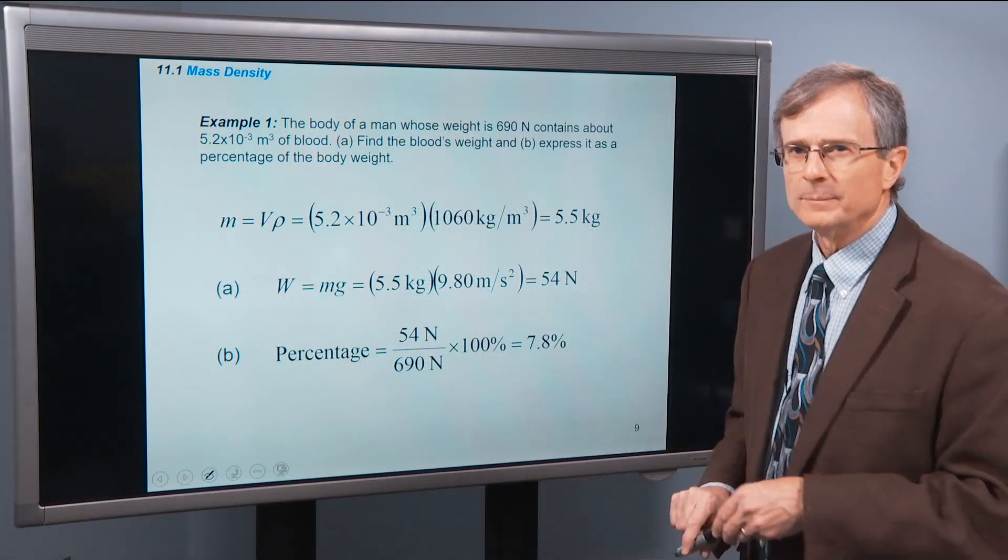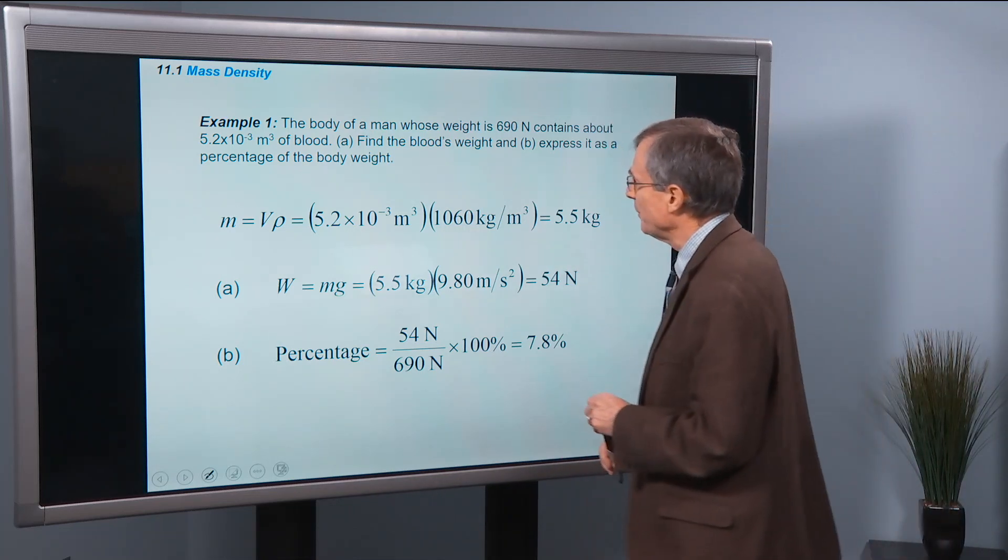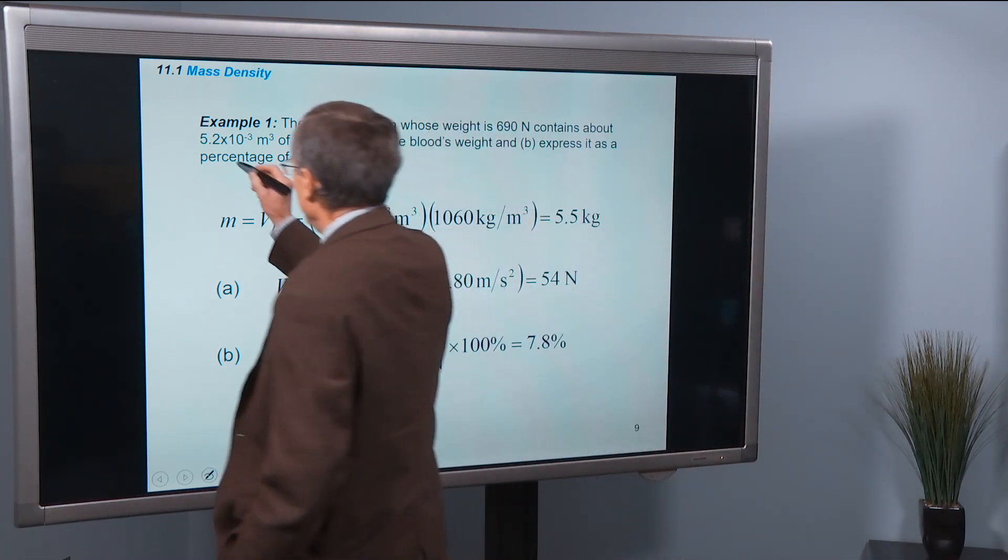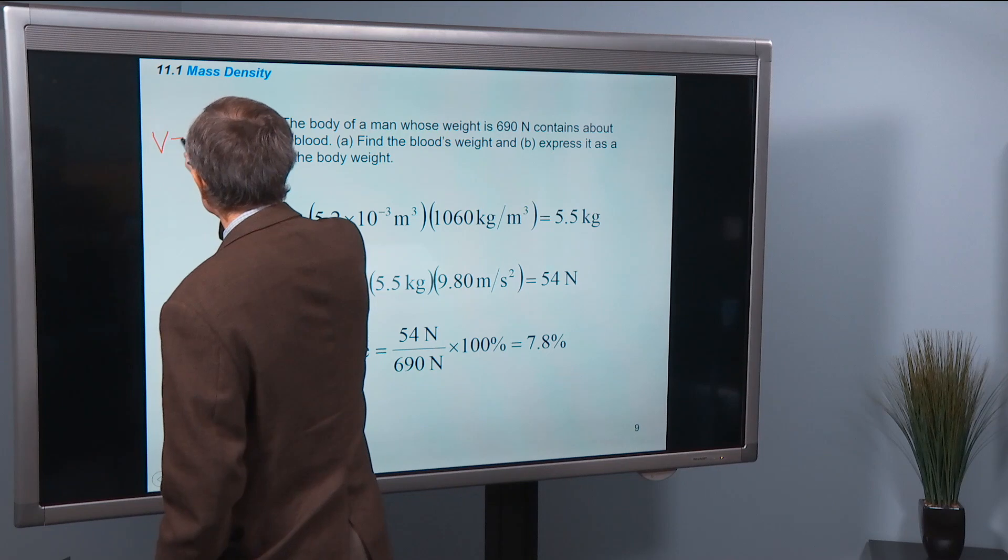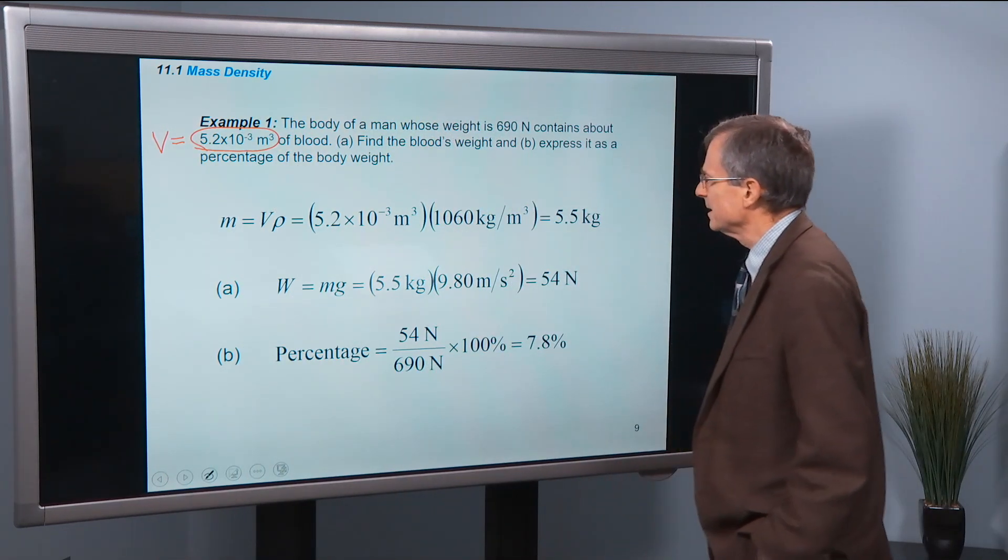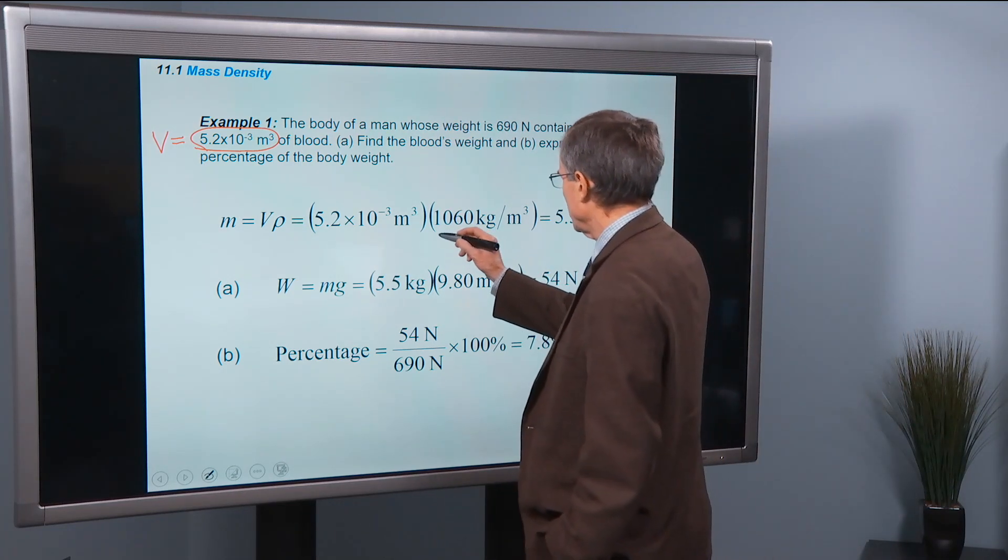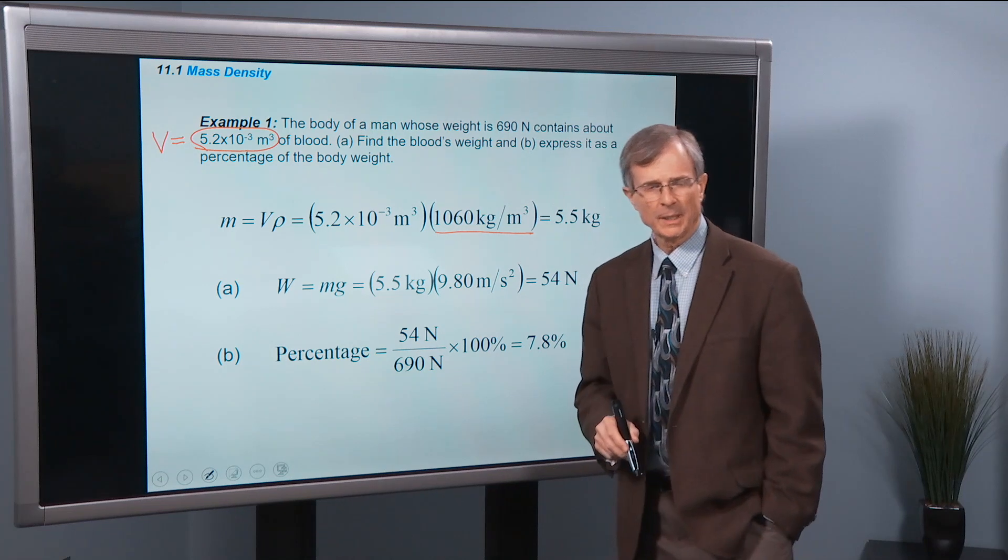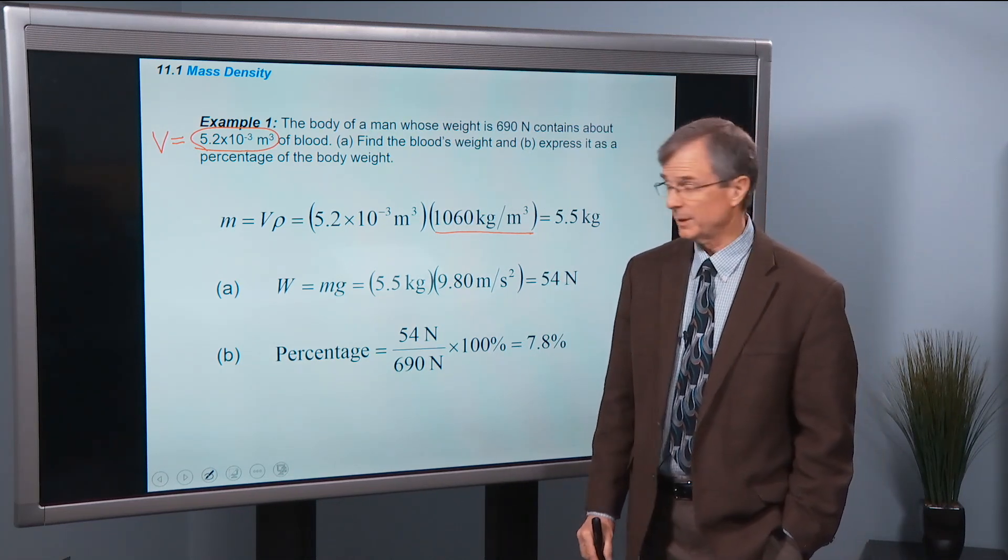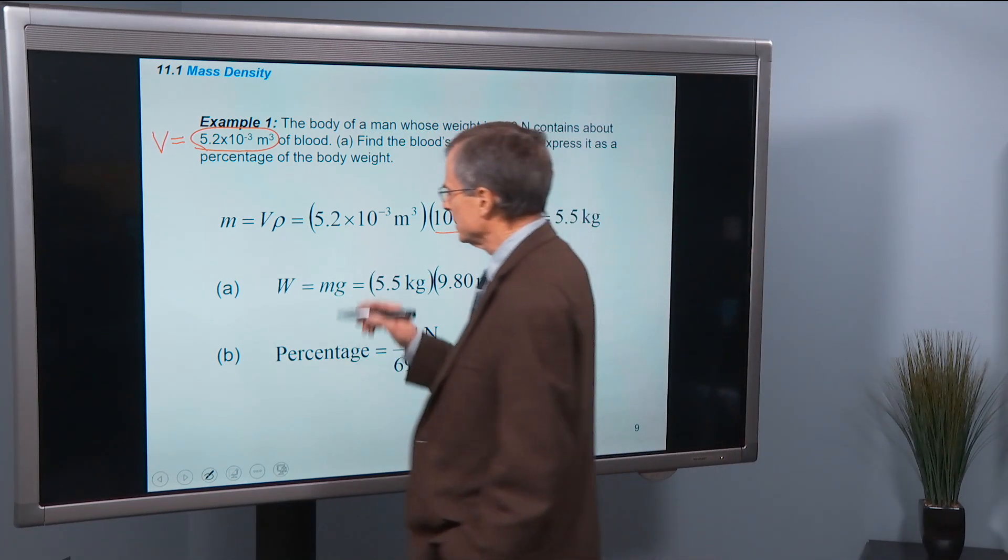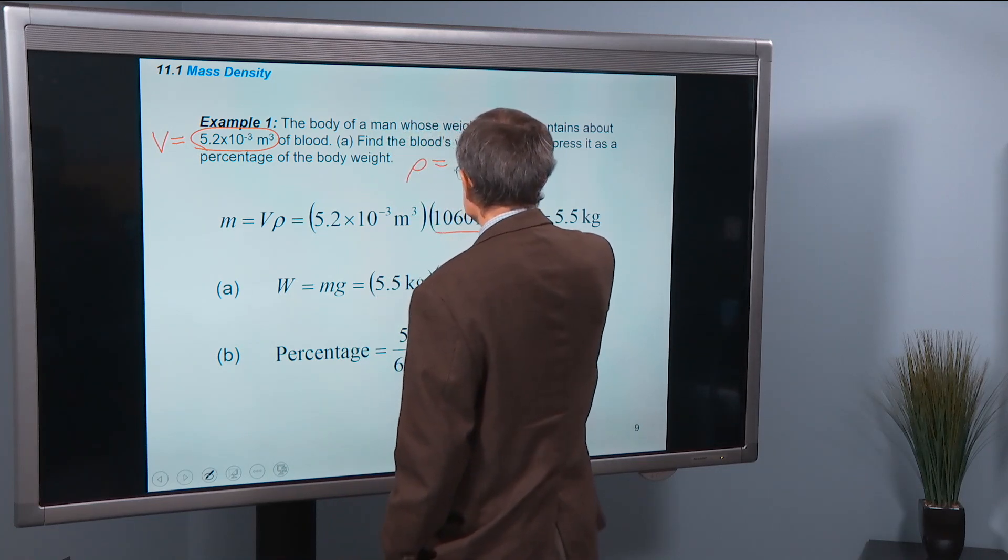So let's do an example. The body of a man whose weight is 690 newtons contains about this volume of blood. Find the blood's weight and express it as a percentage of the body weight. The density of blood is about a thousand kilograms per cubic meter, about that of water. A little bit heavier because it has some other materials in it.